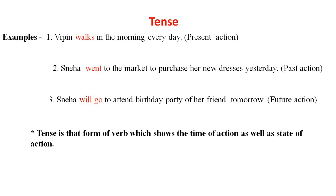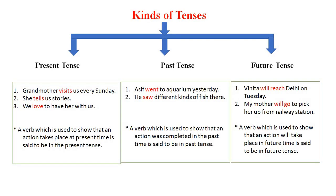Your third example is: Sneha will go to attend the birthday party of a friend tomorrow. Here 'will go' shows the future action — Sneha has not gone to the party yet; she will go tomorrow. Tense is that form of verb which shows the time of action as well as the state of action. There are three kinds of tenses: present tense, past tense, and future tense.